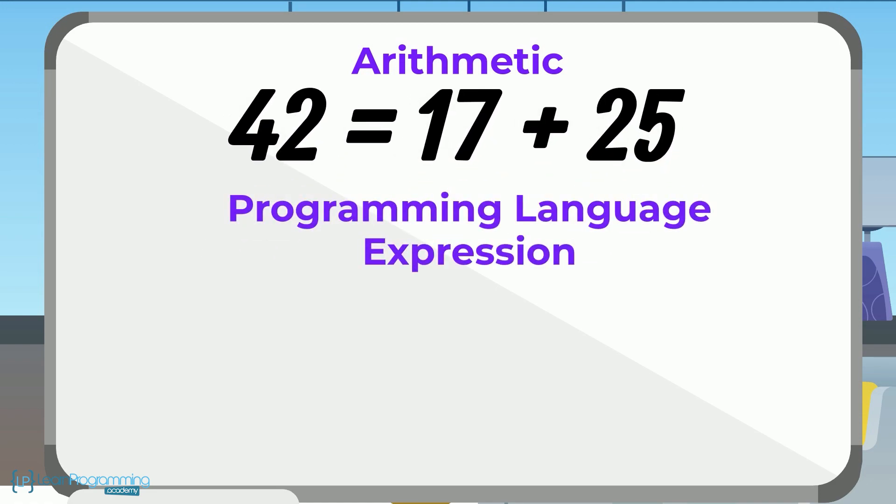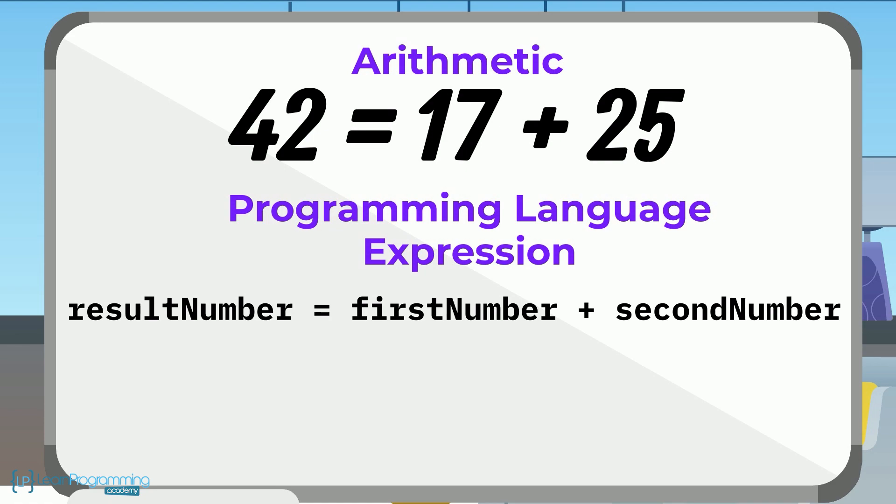In a programming language, the programmer would write a statement like you can see on screen there using the symbolic names we've already mentioned. So here it's result number equals first number plus second number. And when this program executes,